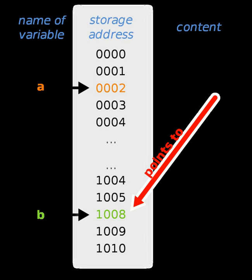They can also be used to point to earlier table entries, as in loop processing, or forward to skip some table entries, as in a switch or early exit from a loop. For this latter purpose, the pointer may simply be the table entry number itself and can be transformed into an actual address by simple arithmetic.